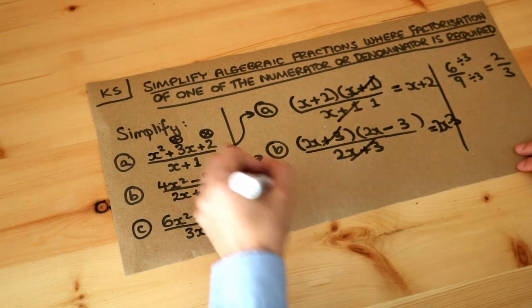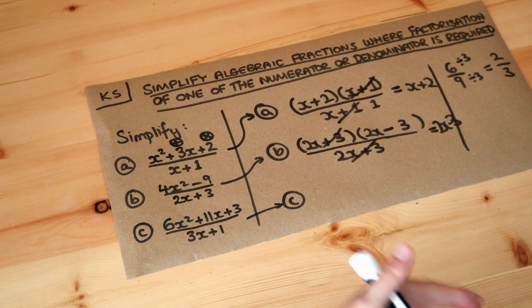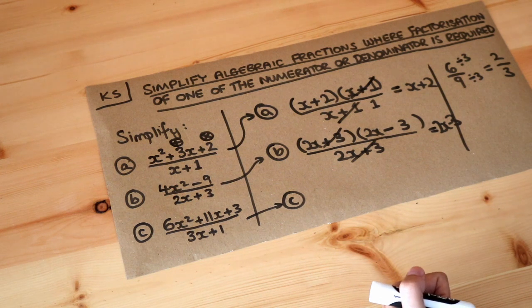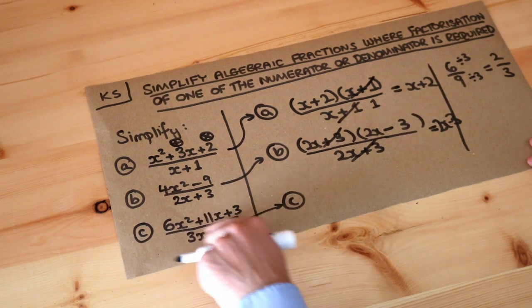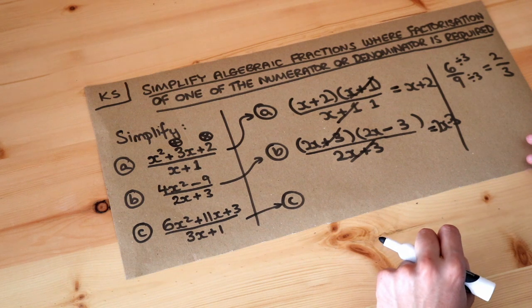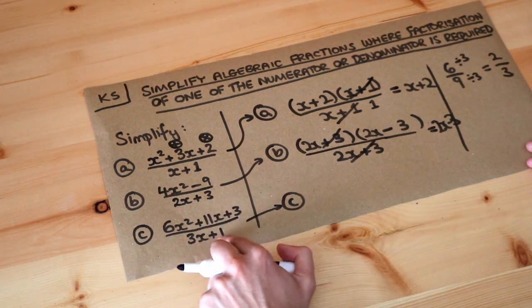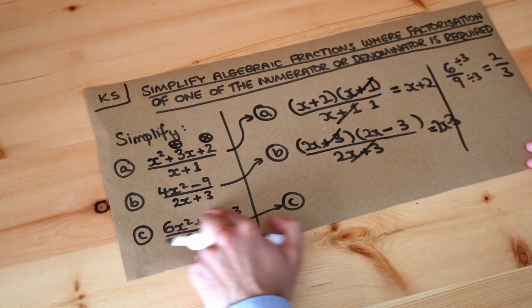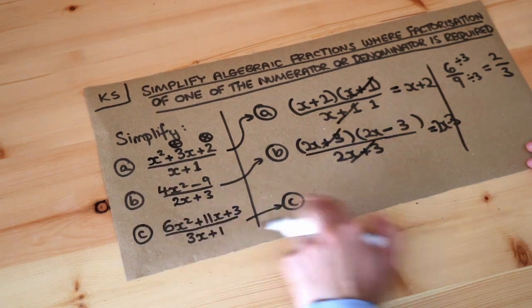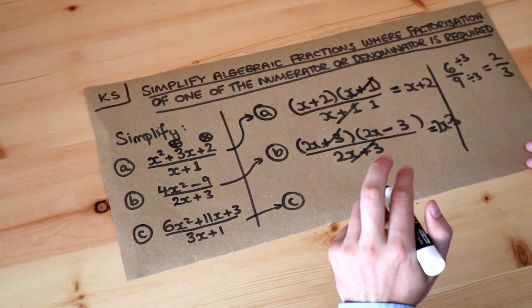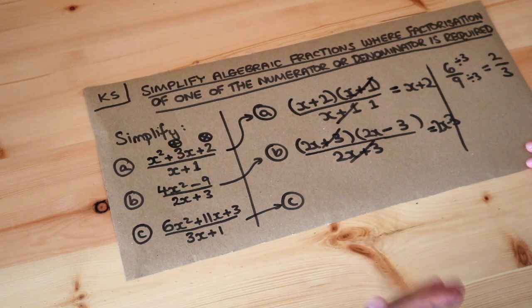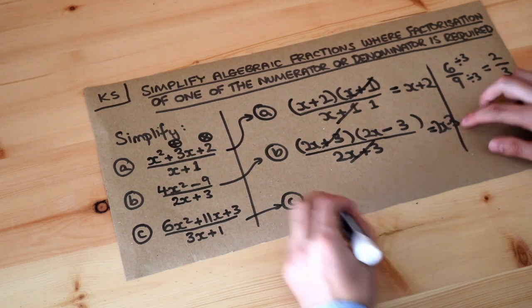And what about the last one? And we can sort of think about the psychology of the person writing the question. If we know that this is going to simplify, it must be there's a common factor top and bottom. So we've got 3x plus 1 at the bottom, there is probably going to be a factor of 3x plus 1 at the top.